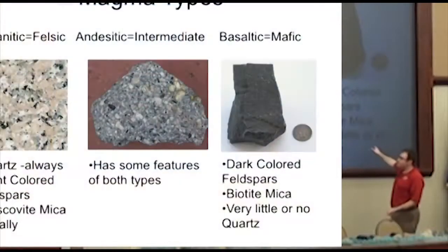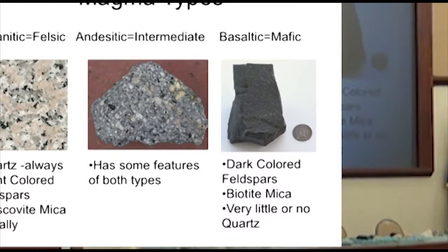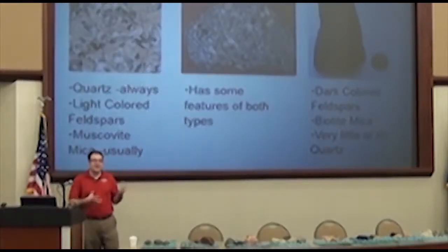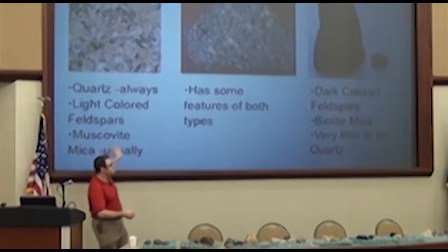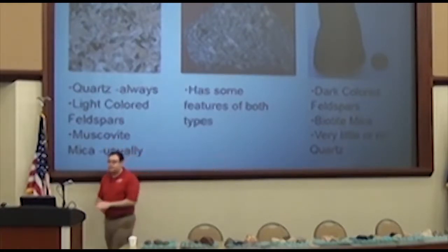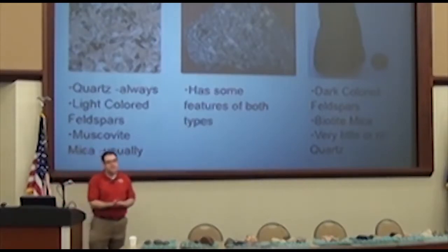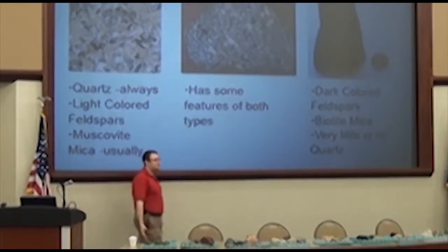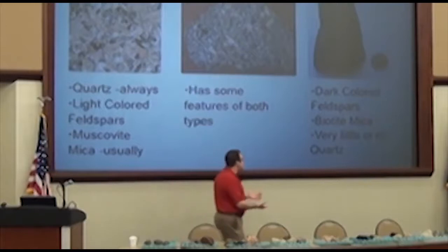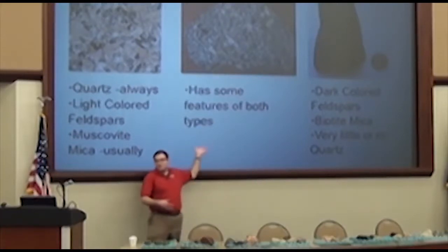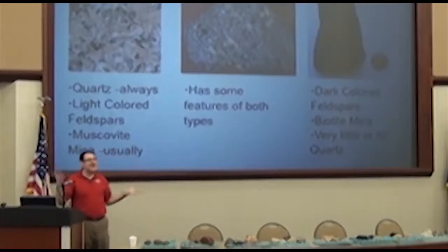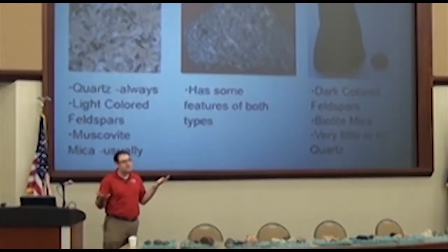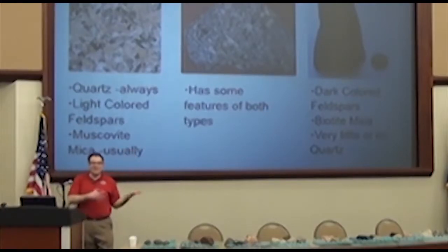The granitic ones actually make more violent volcanoes, while the mafic ones make pretty slow volcanoes. The mafic ones are dark colored — there's biotite mica, lots of feldspars, and not very much quartz. That's the key thing to know with mafics. Then there's the in-between ones — we call them intermediates, or andesitic is another word. Andesite is another rock. These intermediates are kind of half and half — salt and pepper, as I like to say — they have features of both.